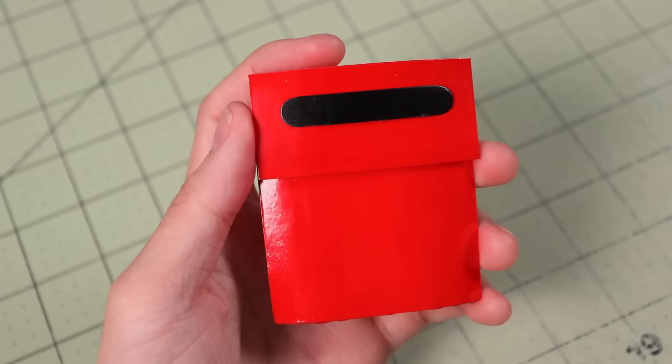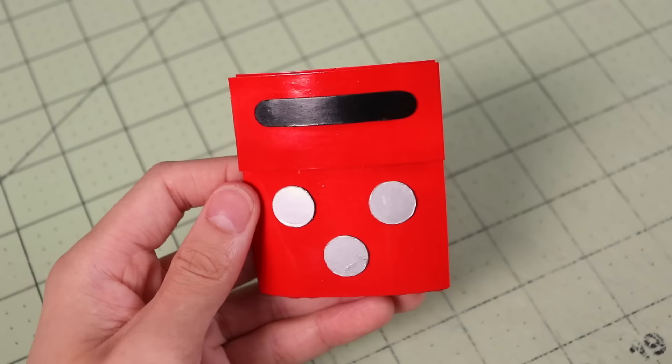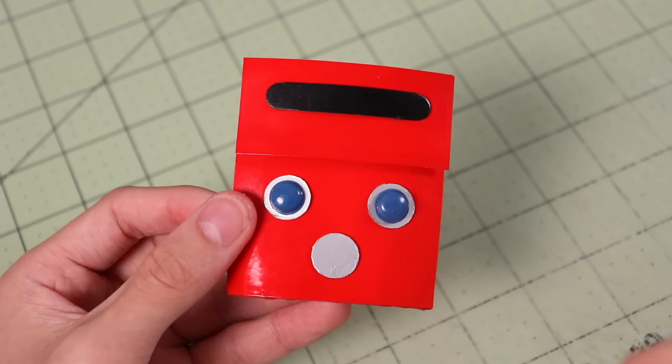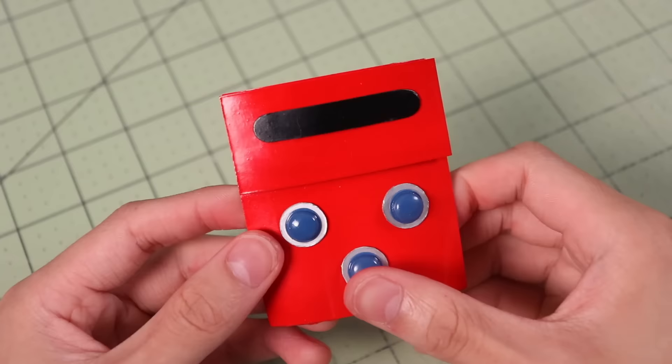Now I'll just simply glue on all of the detail pieces one by one. As you can see, I painted these pieces beforehand because it's just a lot easier to paint them before gluing them on. By the way, I used 10mm googly eyes for those blue pieces.